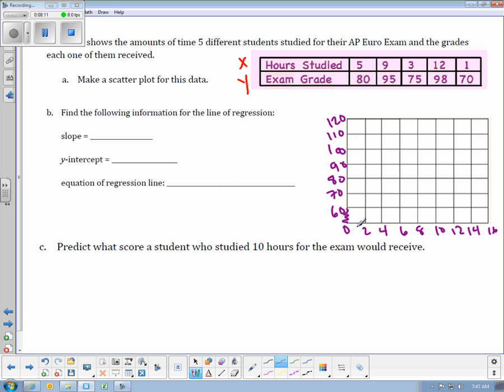We have the space on our graph that we need. So now if I plot these as coordinates, that means I'm at 5 and 80, so right about there. 9 and 95 is going to be right about there. 3 and 75, right about there. 12 and 98, and then 1 and 70.